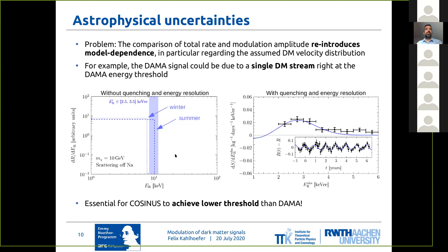To illustrate this point, let's look at a maybe somewhat contrived example where we assume that the DAMA signal is due to a single dark matter stream. This is in a sense the most optimistic scenario from the point of view of DAMA, where essentially there would be a dark matter stream with such a velocity that it would be just below threshold in winter and just above threshold in summer.